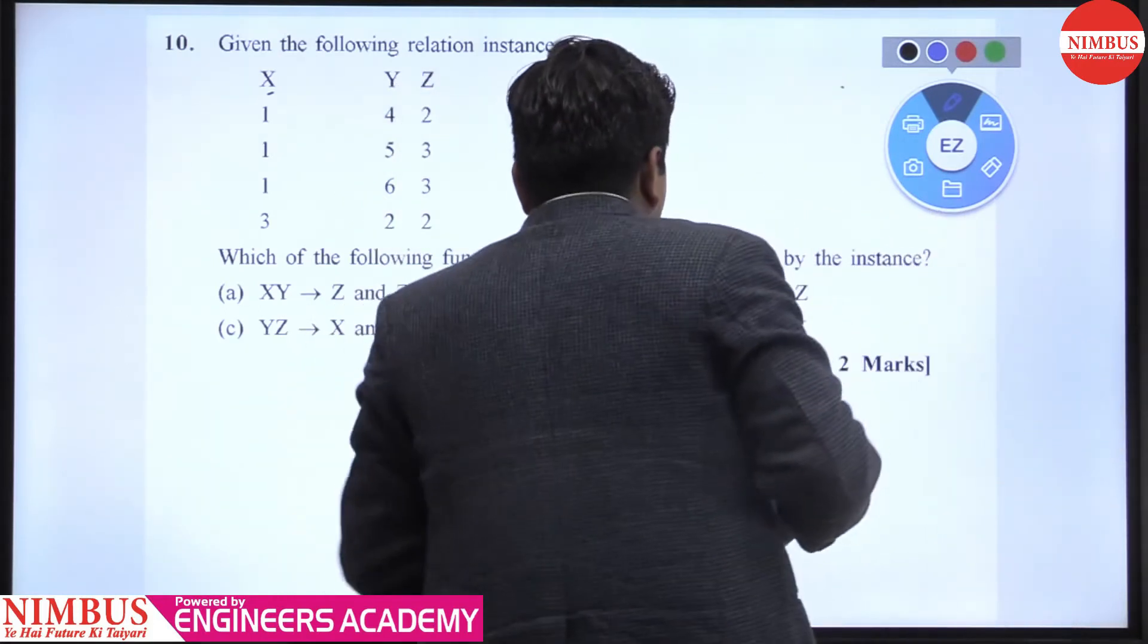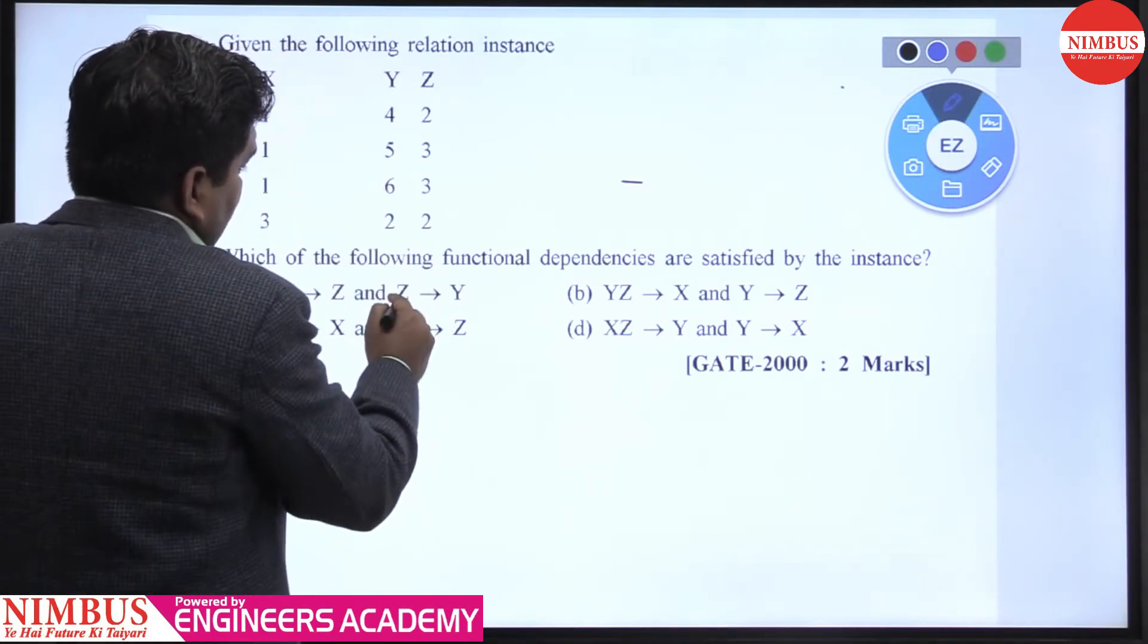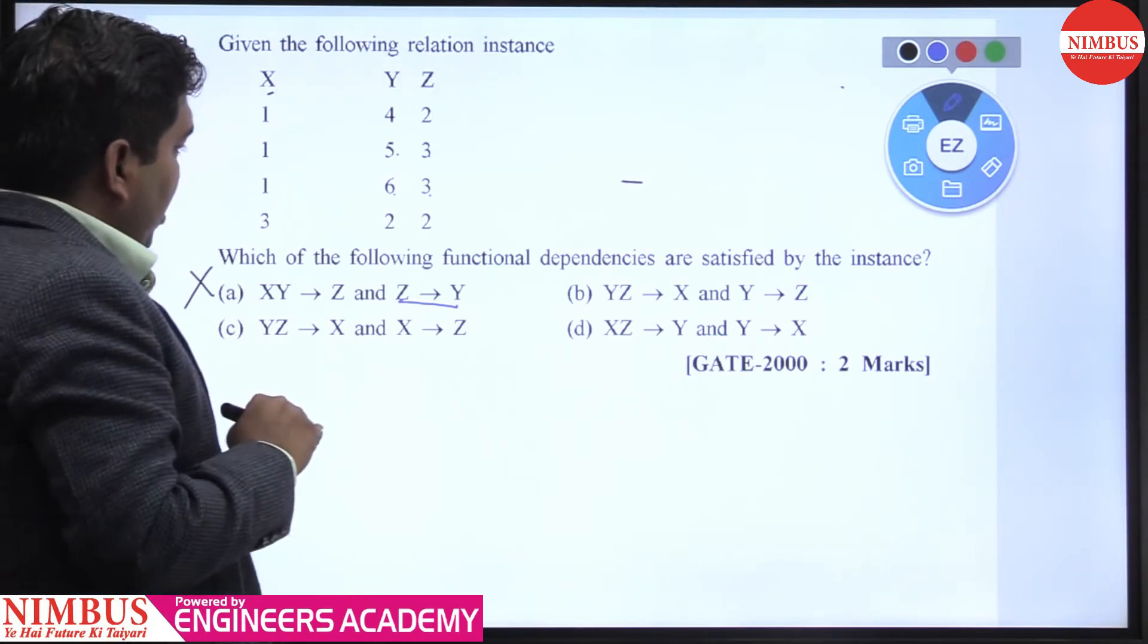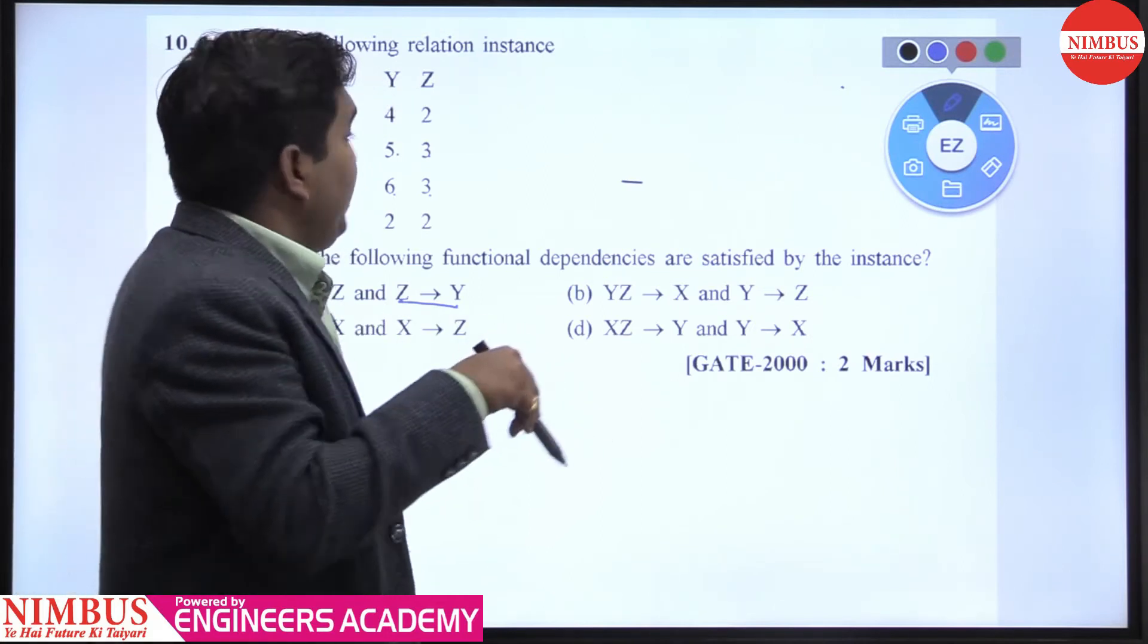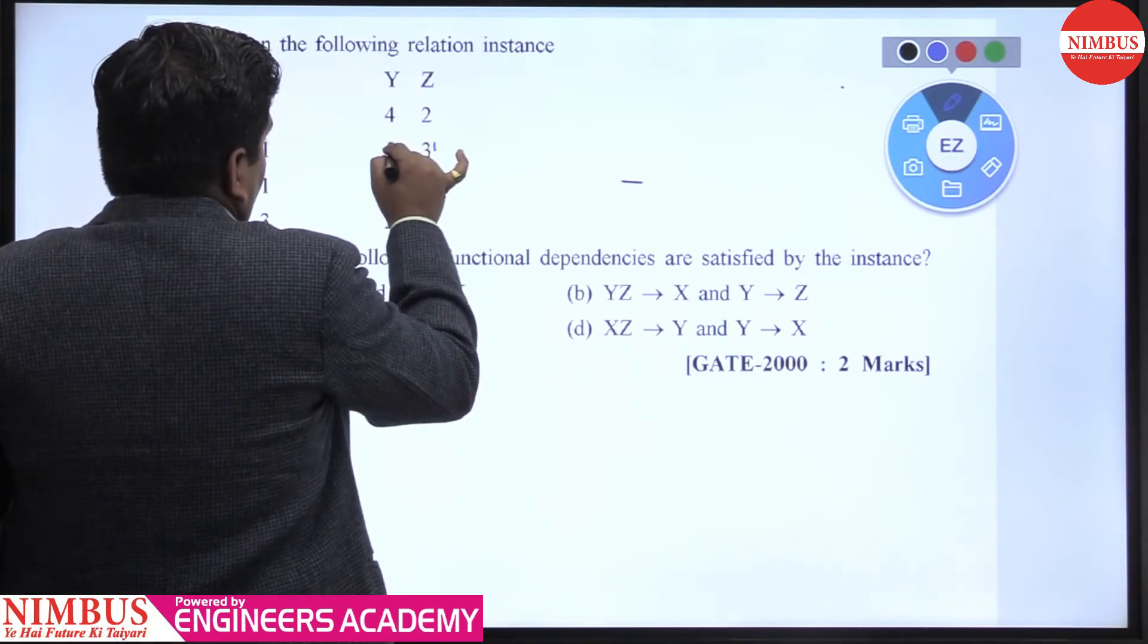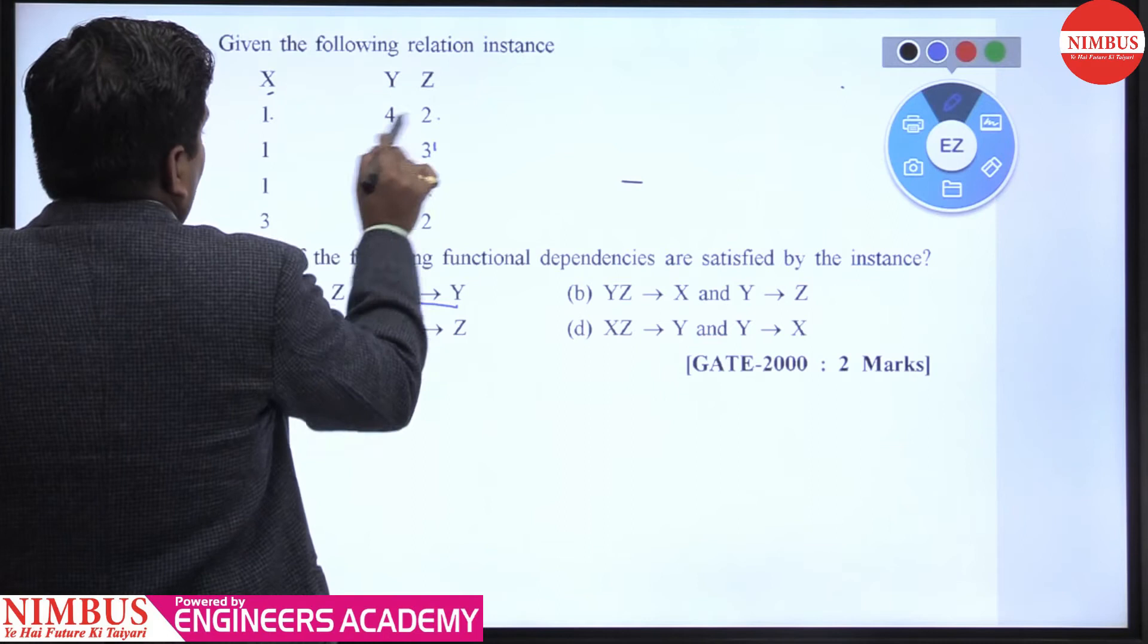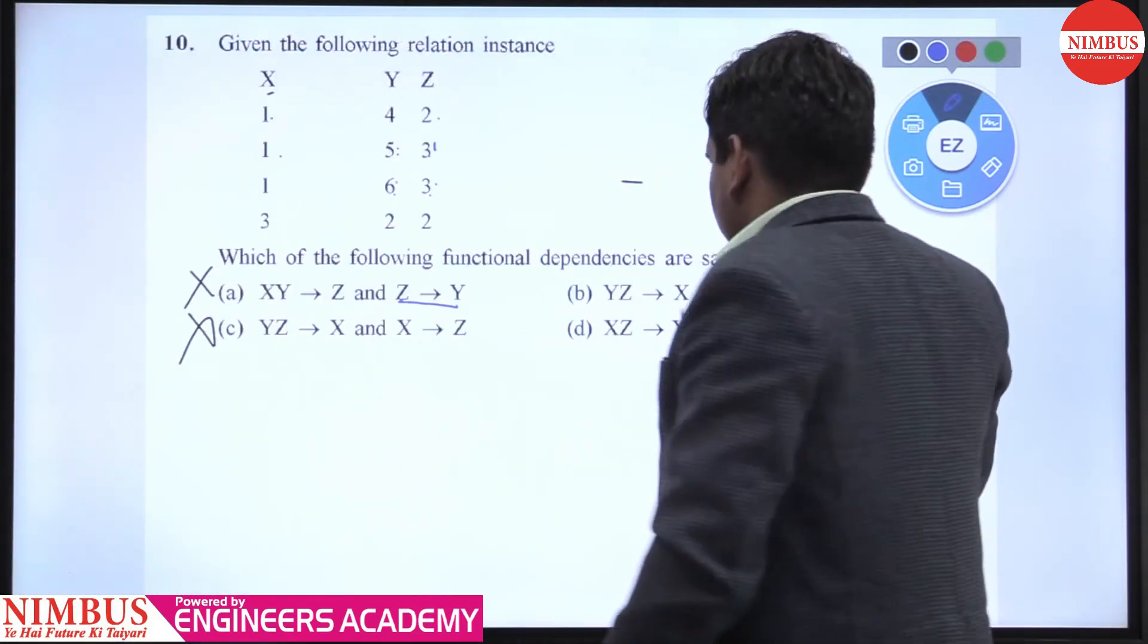You don't need to find all non-trivial combinations. We can directly eliminate the options. First we check Z→Y. That is why we eliminate: 3 gives 5, here 3 gives 6, that is wrong. Why? Because in Z→Y, whenever Z value repeats, corresponding Y value must be same. So at 3 you're getting 5, and again 3 you're getting 6, that is not valid. And in X→Z: 1 gives 2, 1 gives 3, wrong.